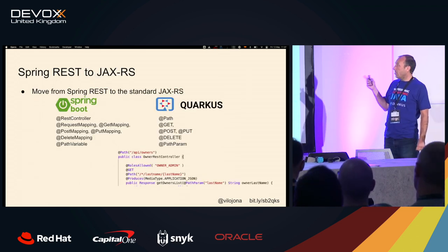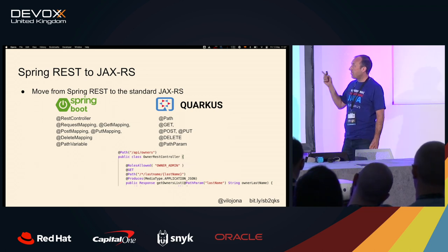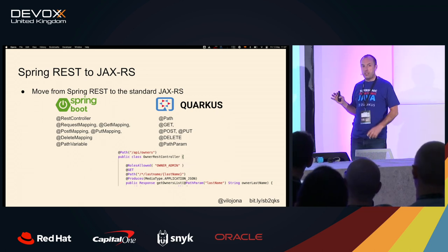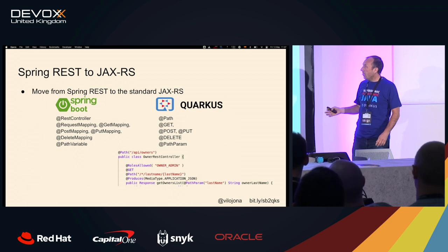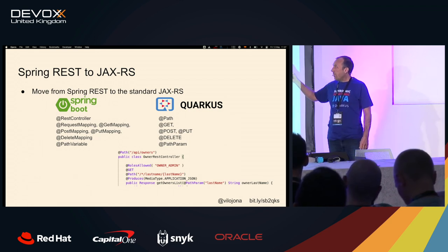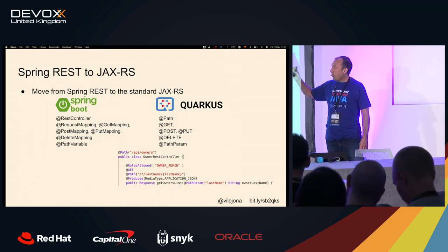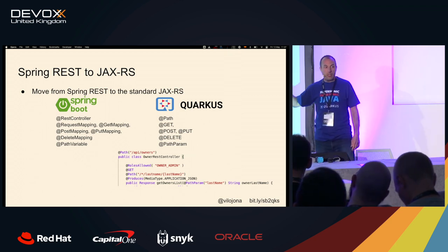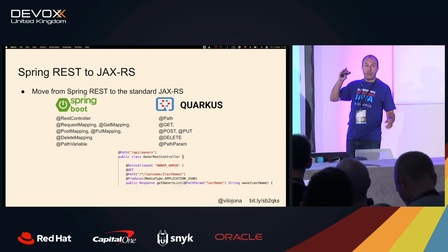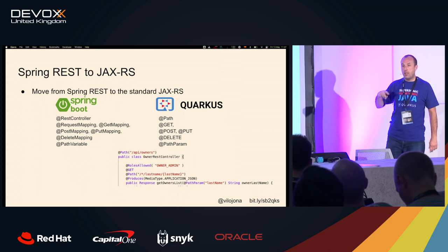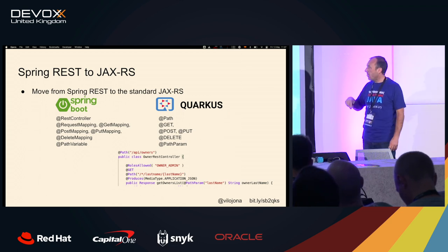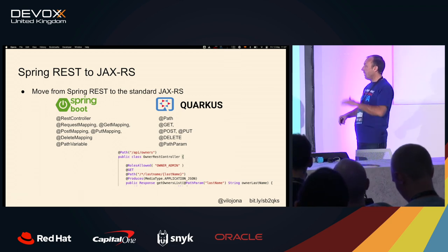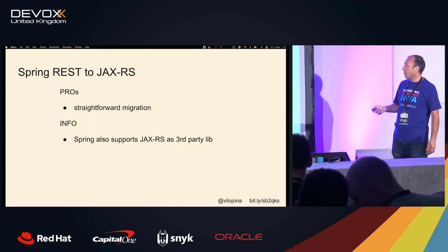Regarding REST — we need to move to JAX-RS. It's more or less a case of replacing annotations one by one. Except if you are using @RequestMapping in Spring, where you can pass both the verb and the path in the same annotation — then you need to break it down. But it's very easy.